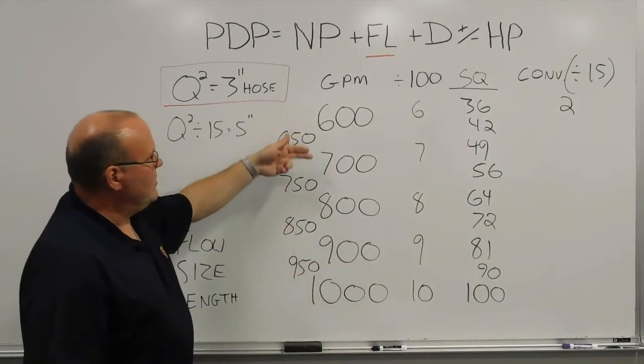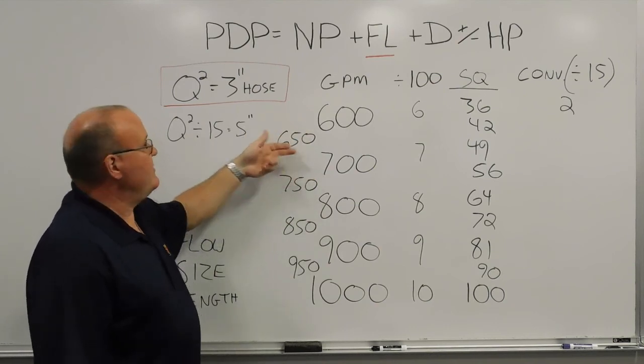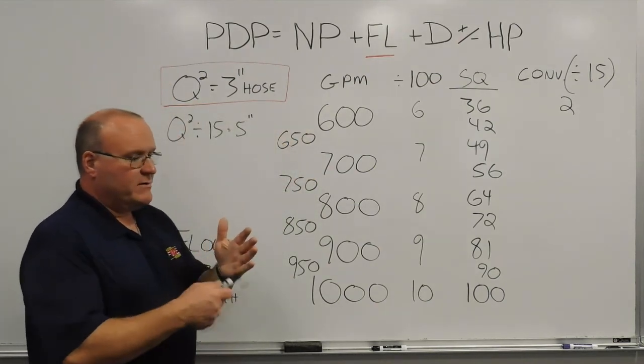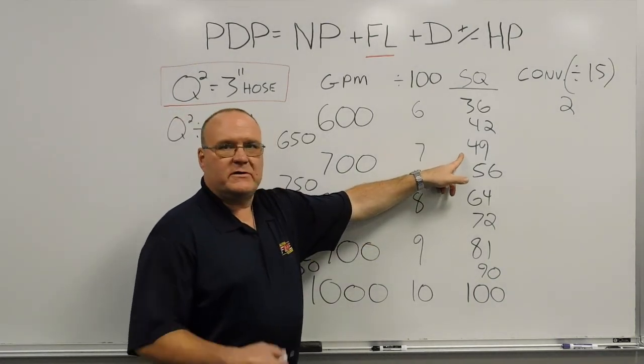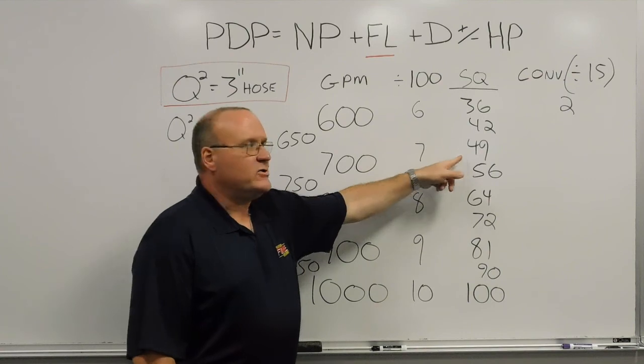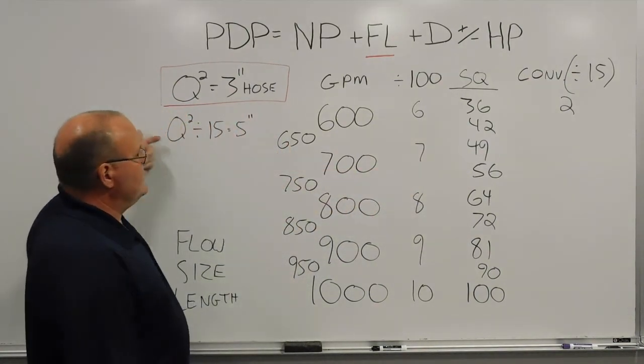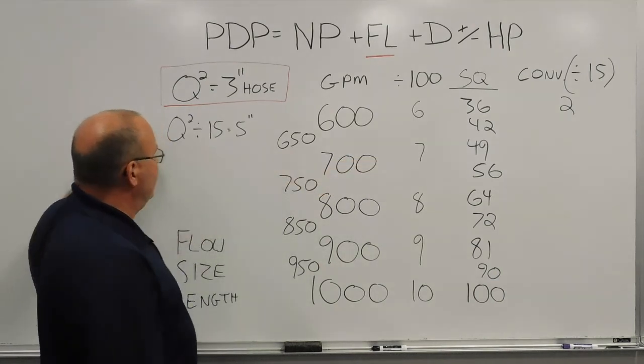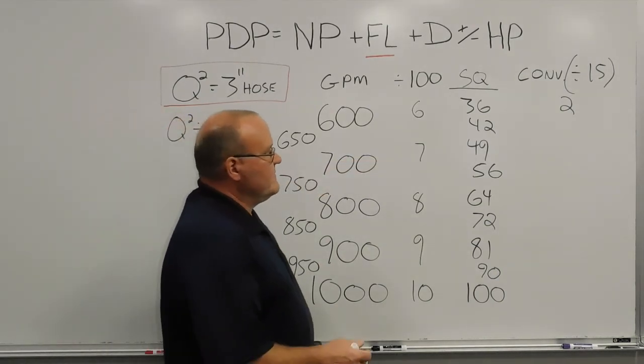When you come down here, and we'll stay with our whole numbers for now, 700 gallons a minute through 3 inch hose, Q squared, 7 times 7, there would be 49 pounds of friction loss for every 100 feet of 3 inch hose if we were trying to put 700 gallons a minute through it. For 5 inch hose, we divide 49 by 15, and you're going to end up with just over 3.